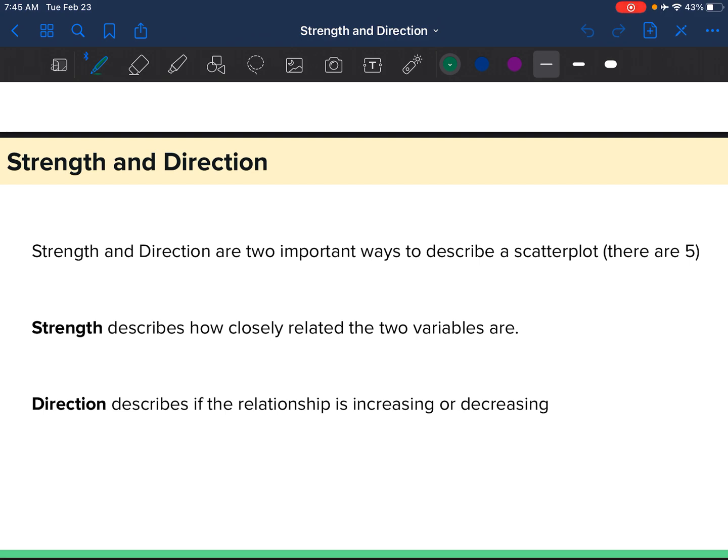Strength describes how closely the variables are related to each other, and direction describes if that relationship is increasing or decreasing.